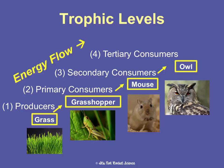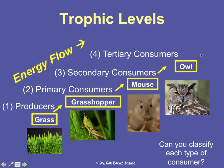Energy flows one direction — upward. Most of the energy is at the bottom and the least amount is at the top. The grasshopper eats grass, so it's an herbivore. The mouse eats the grasshopper, so it's a carnivore. The owl eats the mouse, so it's a carnivore too.